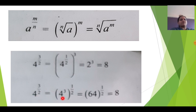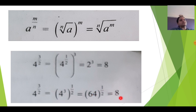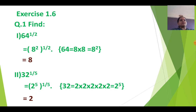Similarly, if you want you can do it the other way. First take the 4 cube value. 4 cube is 64, and then take the square root — the answer is 8. In both cases you are getting the same answer.